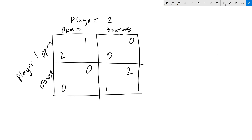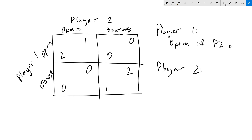Let's return to our battle of the sexes game and talk about what the best responses are for each player. Let's start out with player one. When thinking about player one's strategy, we need to think about what player two could potentially be doing. If player two goes to opera, which is the better choice for player one? Well, two is better than zero, so player one is better off picking opera if player two also picked opera. Likewise, if player two picked boxing, player one would get zero by going to opera but one from going to boxing, so they'd rather go to boxing.